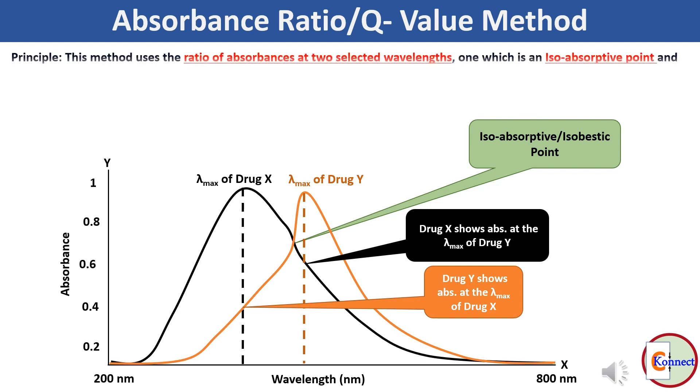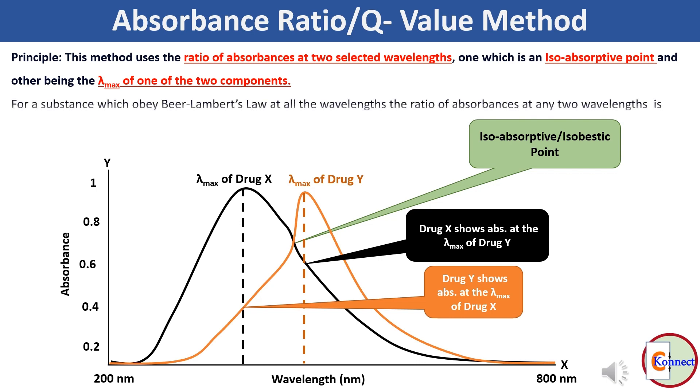Hence, we can say that this method uses the ratio of absorbance at two selected wavelengths, one which is an isoabsorptive point and another being the lambda max of one of the two components.